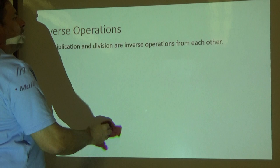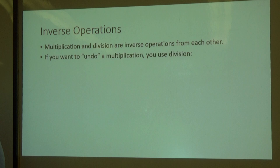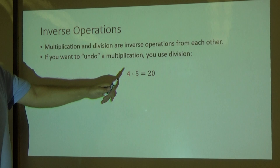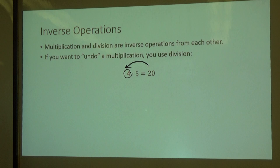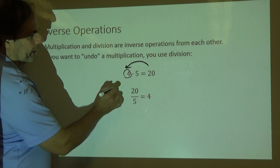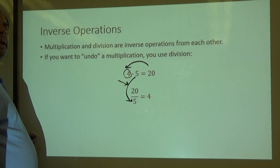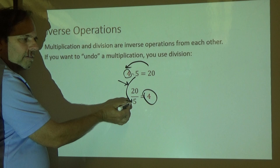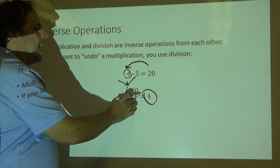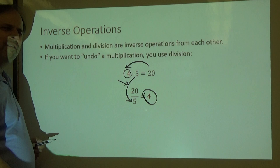Multiplication and divisions are also inverse operations. What does that mean? If I want to undo a multiplication, I use division. Look, I started with a four, multiplied it by five, and got 20. How would I take that 20 and get back to four? I would divide. I can take that 20, divide it by the same number that I multiplied it by, and I get back to my original value. Four times five equals 20. Take that 20 and divide it by the five, and you get back to your original value of four. That means multiplication and division undo each other. They're inverse operations.